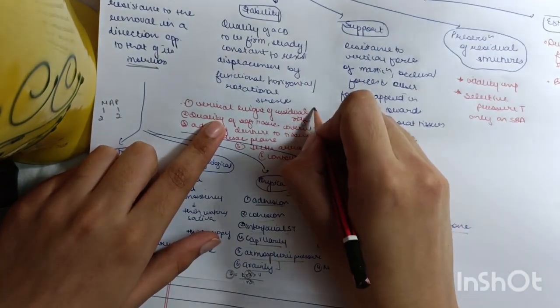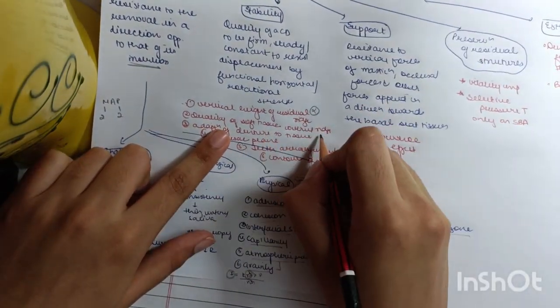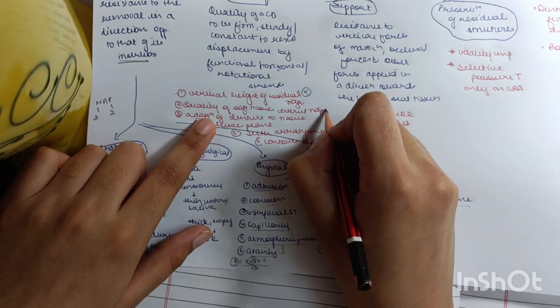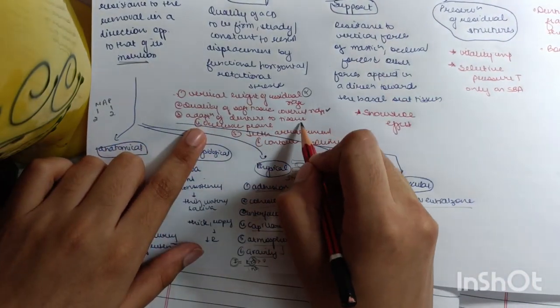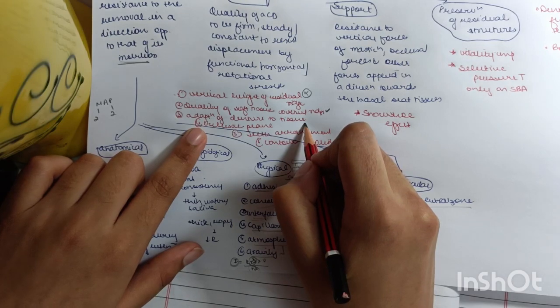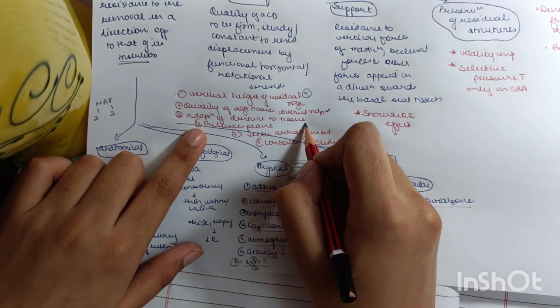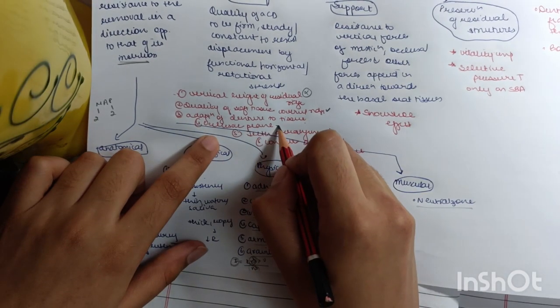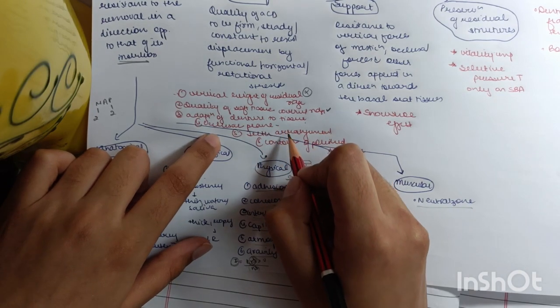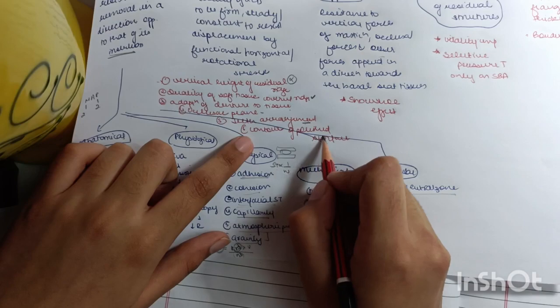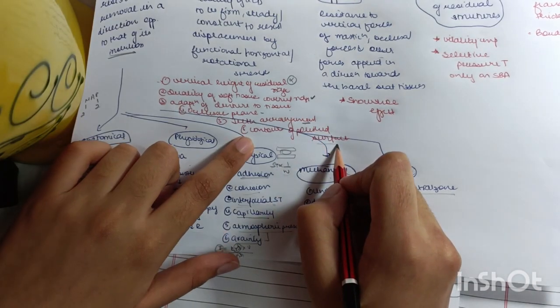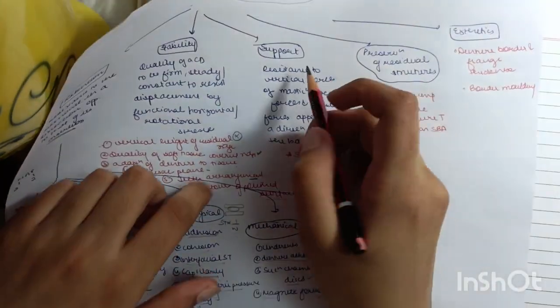Quality of soft tissue: the tissue covering the denture should be adaptable. Adaptation of the denture to the tissue: yes, if it is closely adapted then it is going to be stable. Occlusal plane: always place the teeth parallel to the occlusal plane. Teeth arrangement always in the neutral zone for stability. Contour of polished surfaces, polished surfaces very important, then only stability will be present.